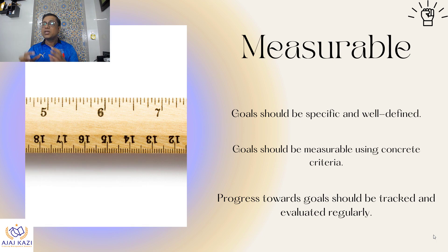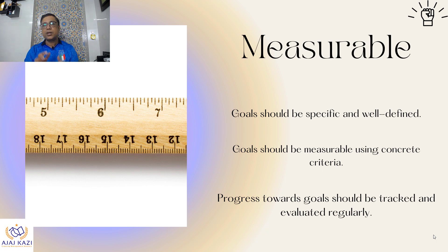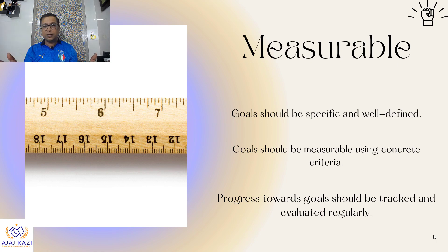Measurable is a goal which can be measured. For example, will our profit increase? By how much? When? That is very important. Goals should be measurable and quantifiable — this is what measurable means.